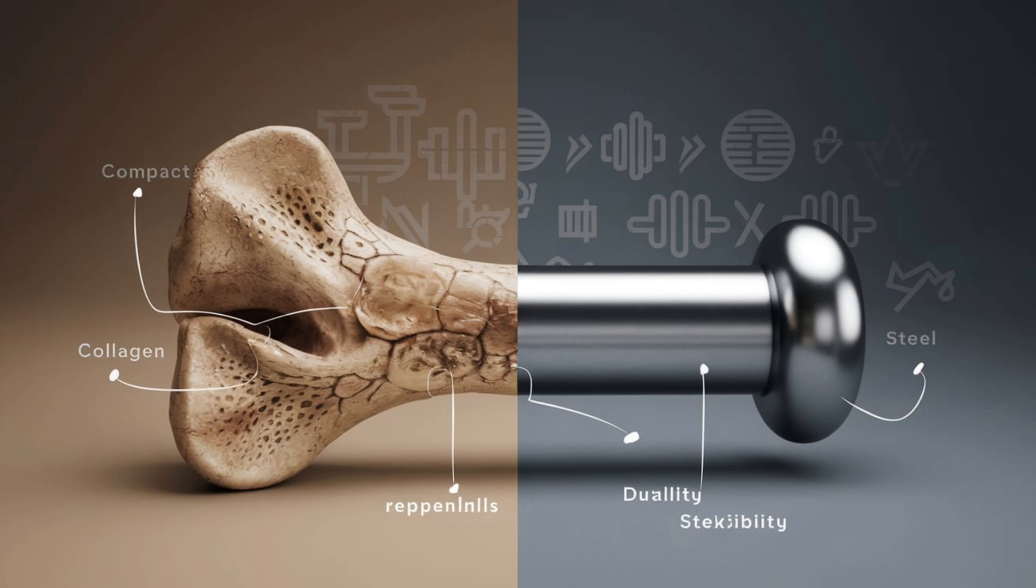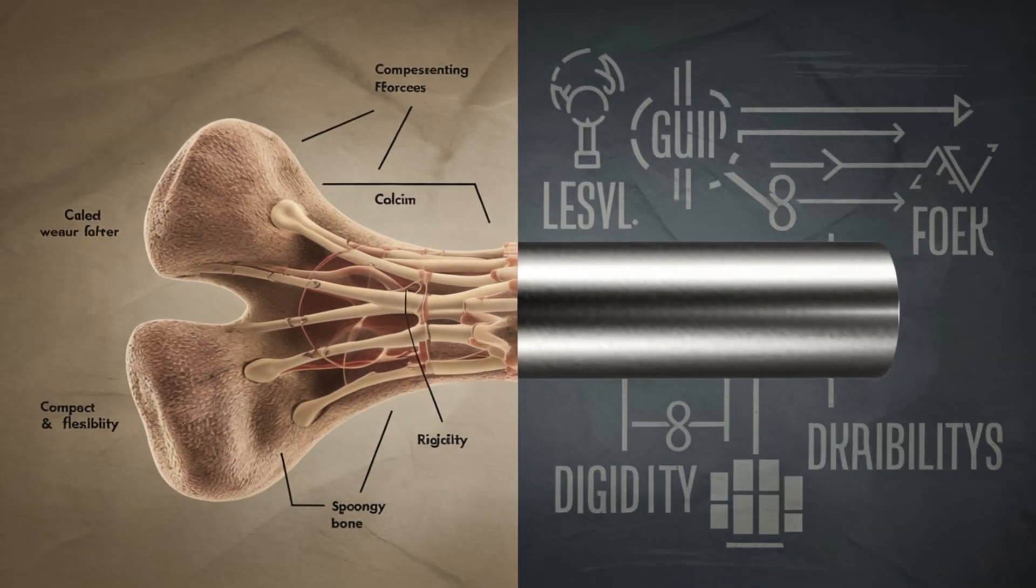If you took a piece of bone and a piece of steel of equal weight, the bone would actually be able to handle more compressive force. In tests, bones have been shown to handle compression better than steel of the same weight.